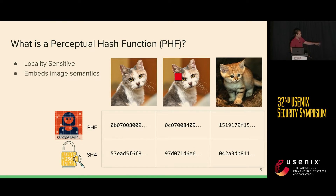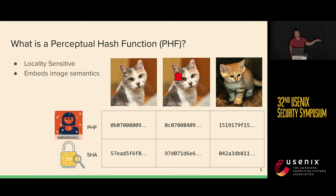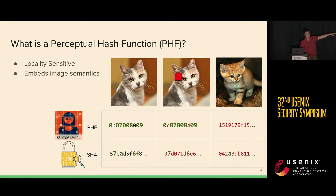The easiest way to explain what locality sensitivity means is using this example. Here we have two cat images which look different, and then I occlude the cat image on the left with a red square. I run all three of these through two hash functions — the first being a perceptual hash function, and the second being a standard cryptographic hash function, SHA-256. If we highlight the differences between the hash digests, we can see that the perceptual hash function on the top remains largely the same even when we apply the red square on top of the image, whereas the digest on the right is still largely different because the image is different. This concept is sometimes referred to as fuzzy hashing. I'll refer to the output of these algorithms interchangeably as hash and digest.